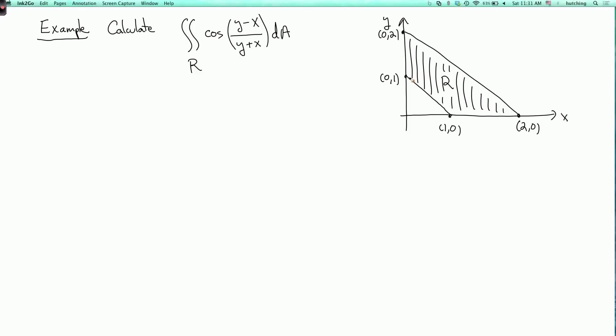So if we try to do this directly, say if we integrate over y first, this looks like a very difficult integral to evaluate. So we want to change coordinates so that instead of having cosine of something complicated, we have cosine of something as simple as possible. For example, it would be nice if one of these things were u and the other were v.